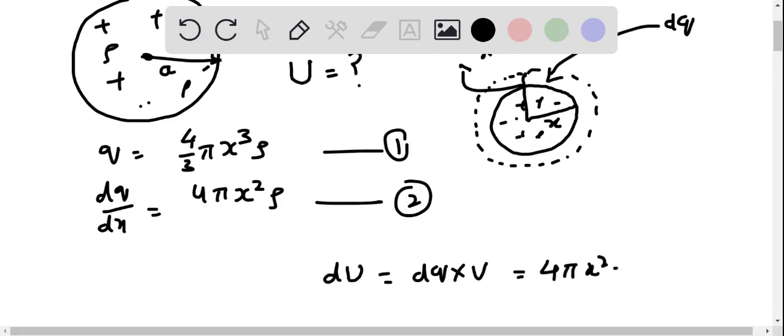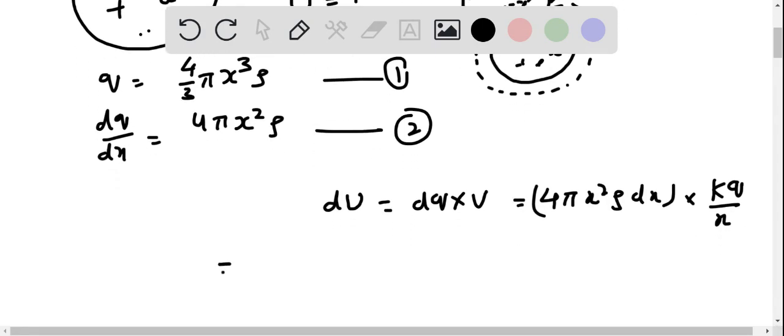dq is 4 pi x square rho dx. Potential is k q by x. dq is 4 by 3 pi x cube rho upon x.